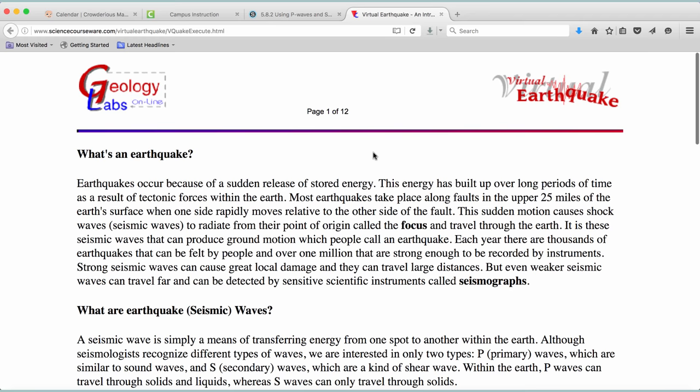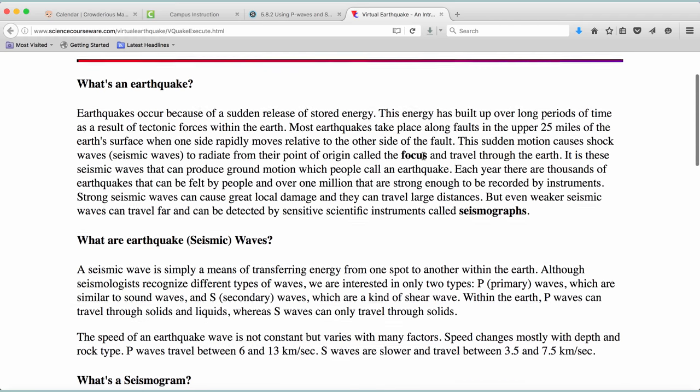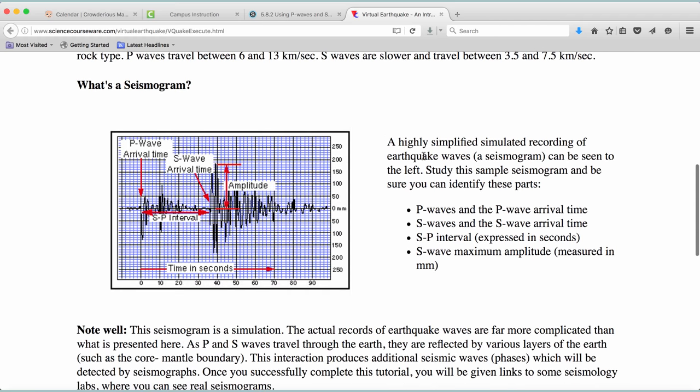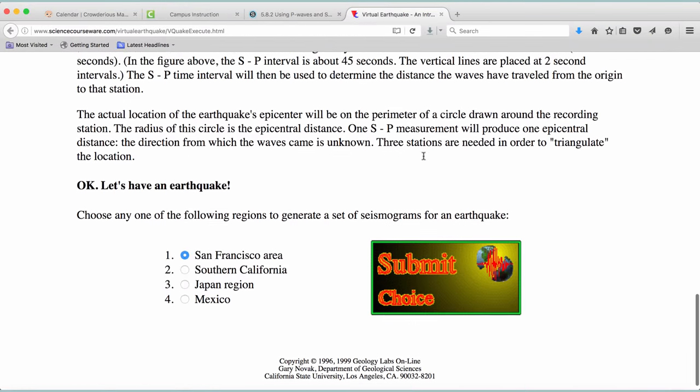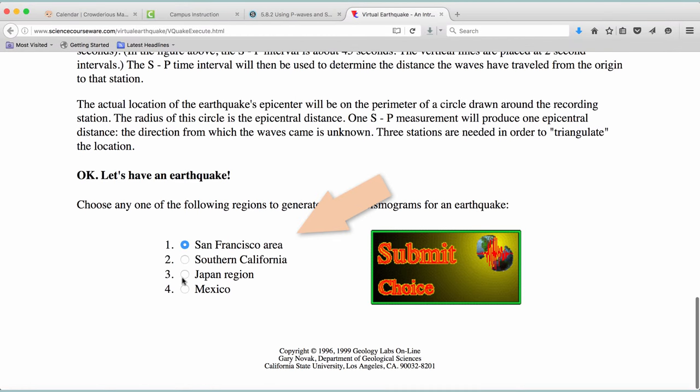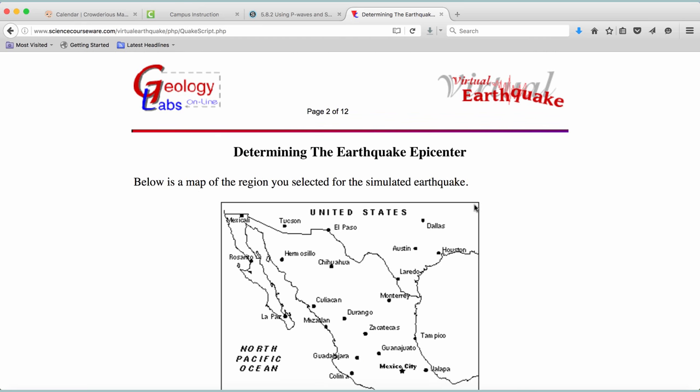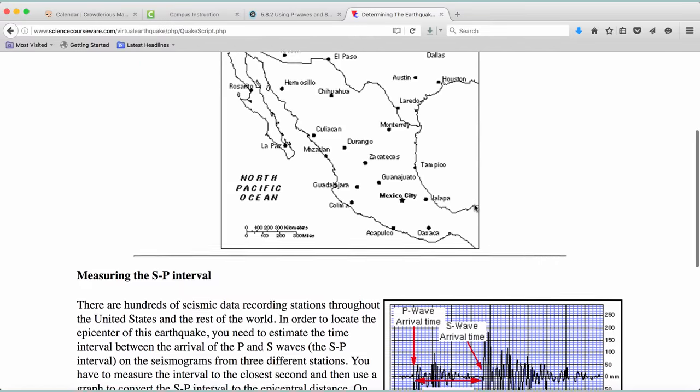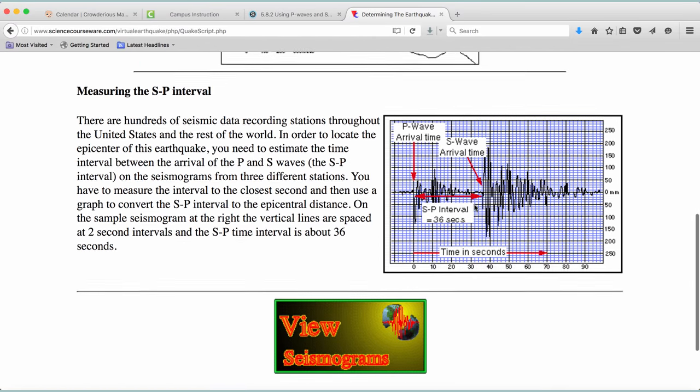Now, this is how you do the geology lab's online assignment. You'll need to approximate an epicenter for San Francisco area, and to help you with doing that, I'll take you through one in Mexico. So, I'm clicking on the Mexico button. You'll click on the San Francisco button. It takes you to another page, like this one, where you click on View Seismograms.